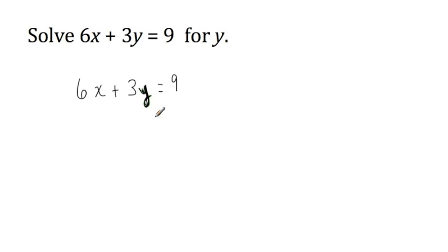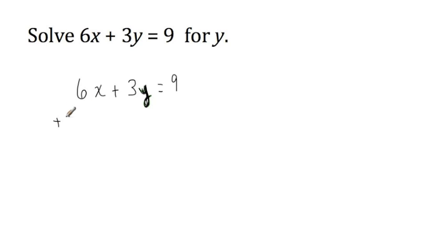Step 3 in solving an equation is to get your variable — in this case y — alone. There's quite a bit going on in the left-hand expression other than just the y, so we have some work to do. The first step is to get rid of all terms without your variable in it by adding the opposite. The first term, 6x, does not have our variable in it, so we're going to add the opposite of 6x, which is negative 6x, to both expressions.